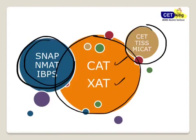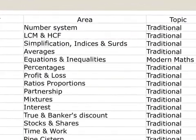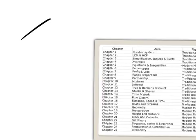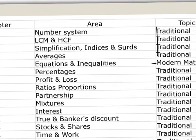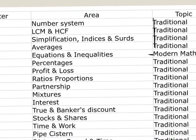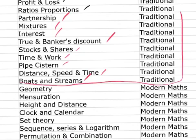These are 25 core topics taken from the CE Ticking orange books, which you'll find in almost every book. There are two kinds of maths topics: traditional maths and modern maths. Traditional maths includes number systems, LCM/HCF, simplification, surds and indices, averages, equations, percentages, profit and loss, ratios, partnership, simple interest, discount, time and work, pipes and systems, time speed distance, and boats and streams.